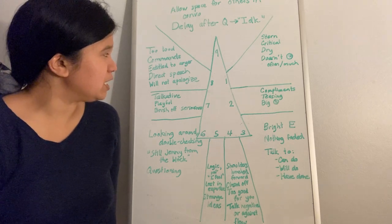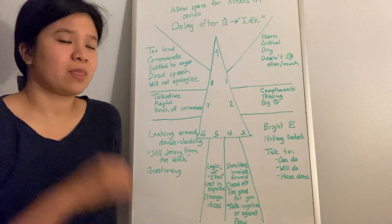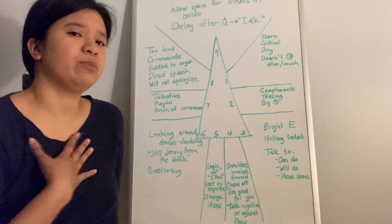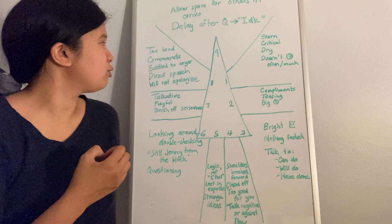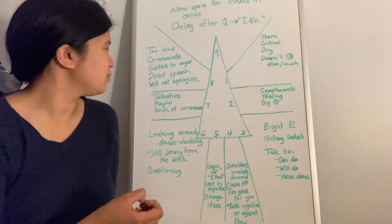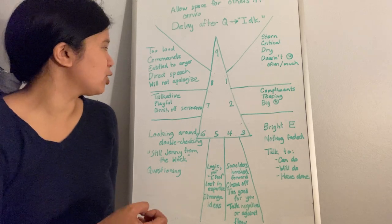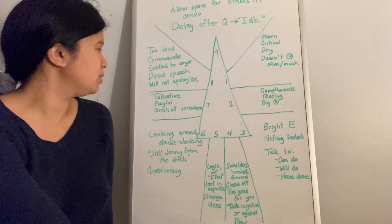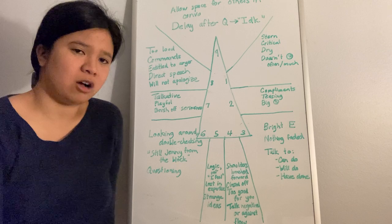Finally, we've got the gut triad. We've got our 8s. 8s, also in my tri-type, can speak too loud for what's appropriate at times. They speak in commands. They can be entitled to anger and aggression. Their speech is very direct and blunt. And 8s will not apologize. They are prone not to apologize.